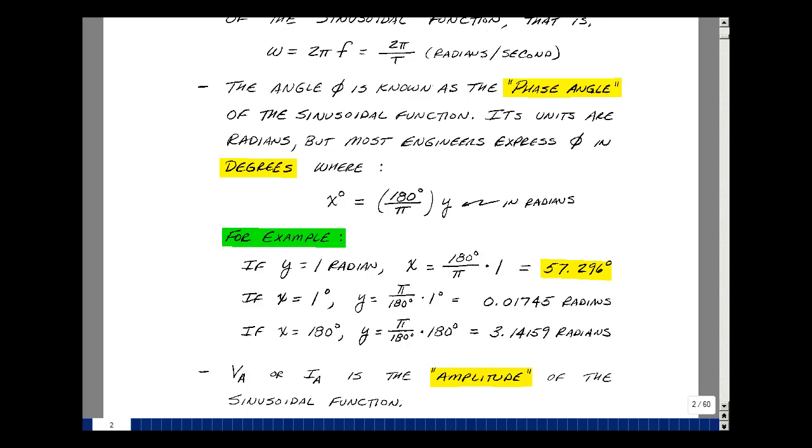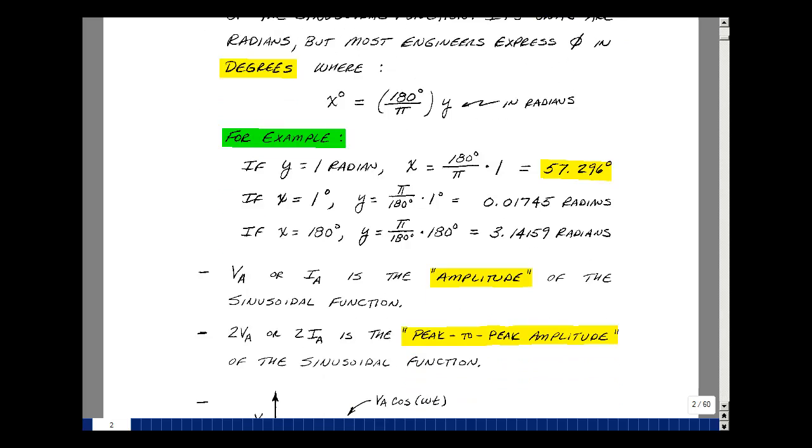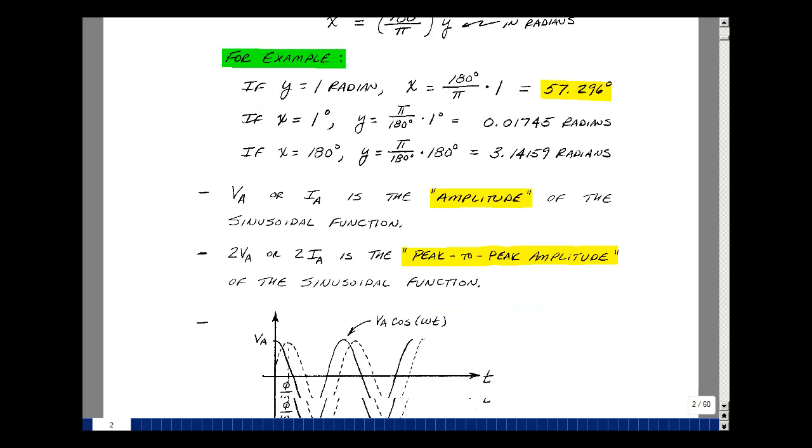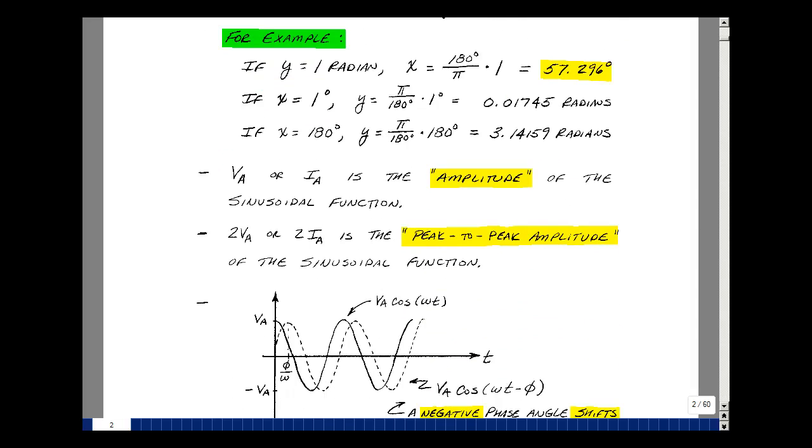The value of v sub a, or i sub a for our cosine function, is called the amplitude. The difference between the max and the minimum would be twice v sub a, or twice i sub a, and we call that the peak-to-peak amplitude of the sinusoidal function.